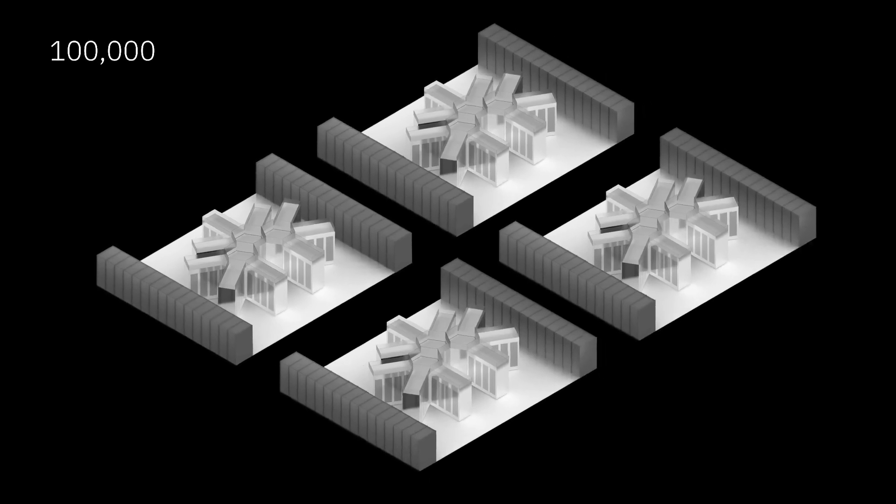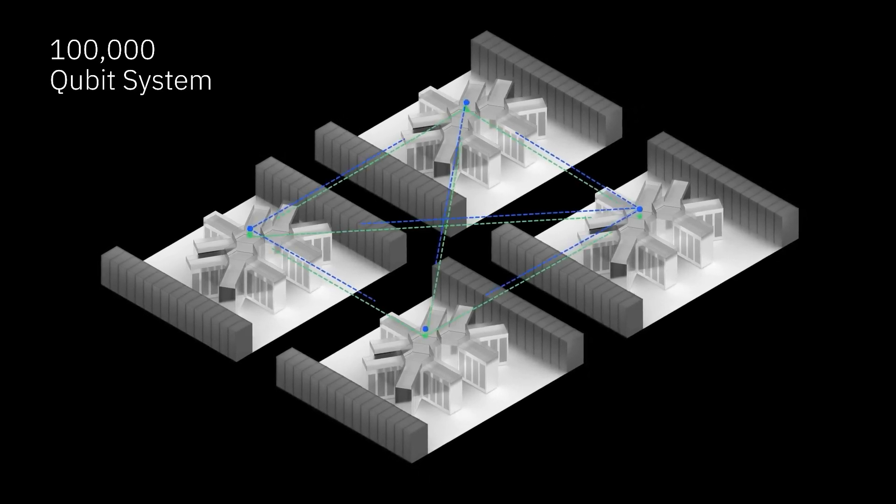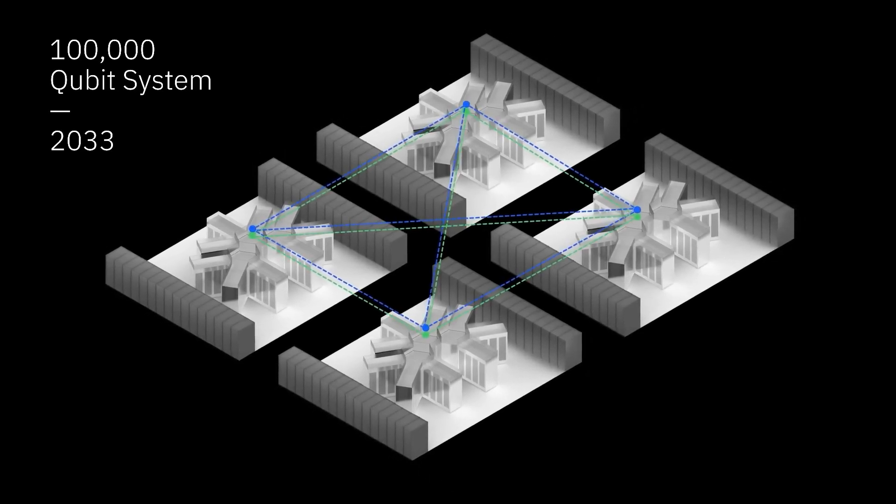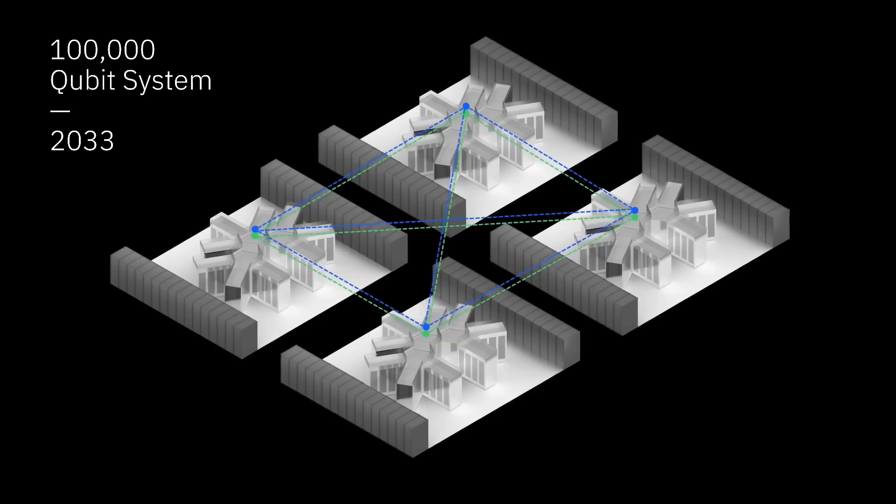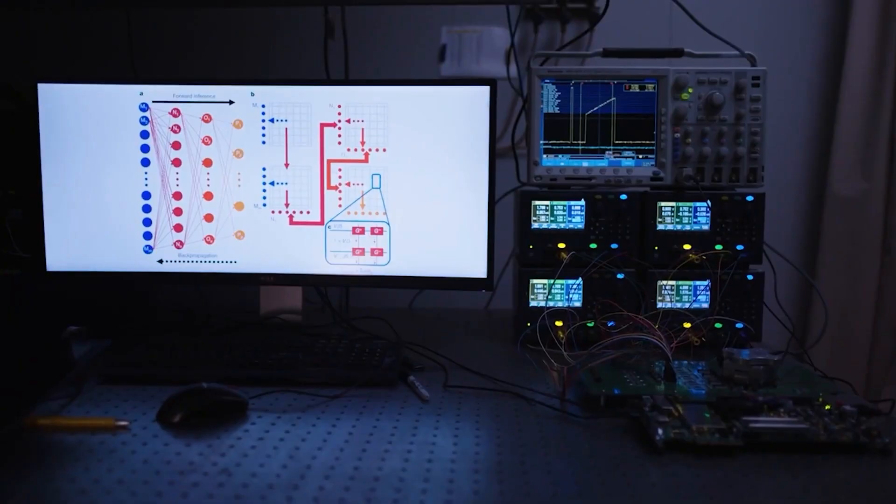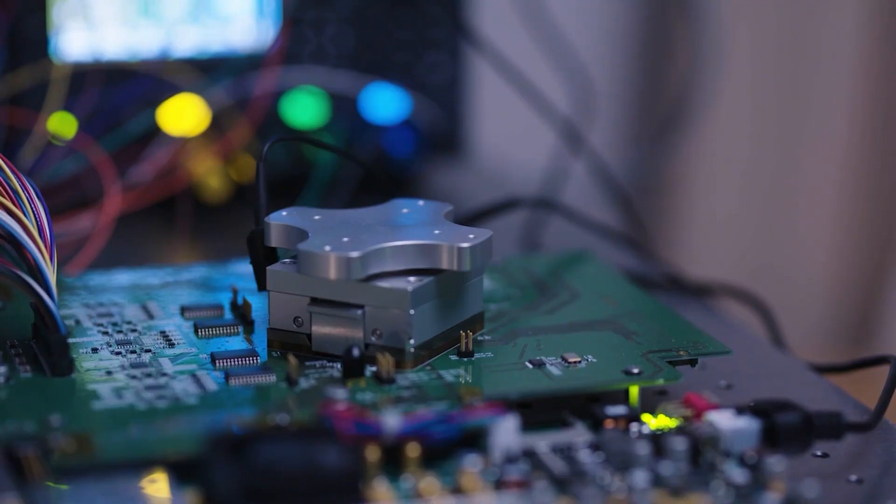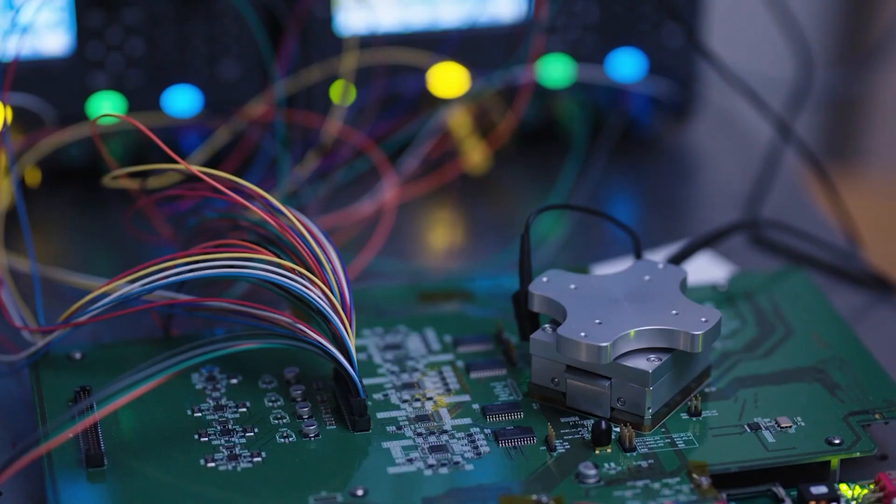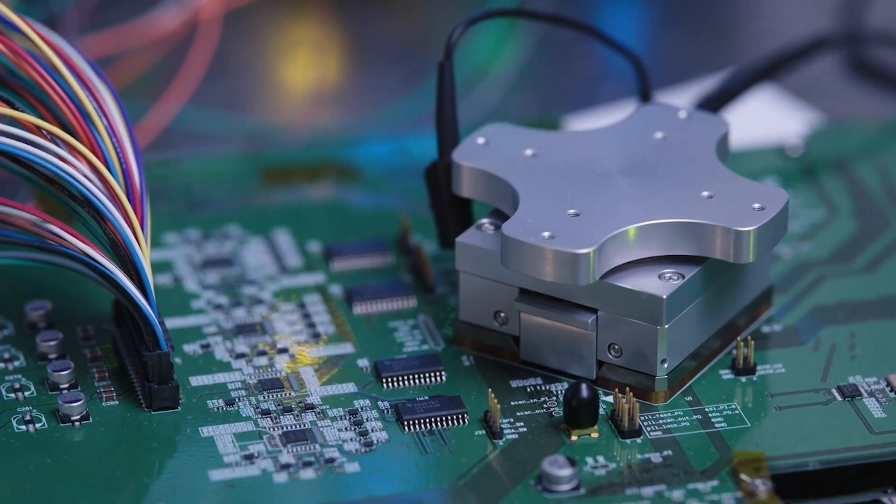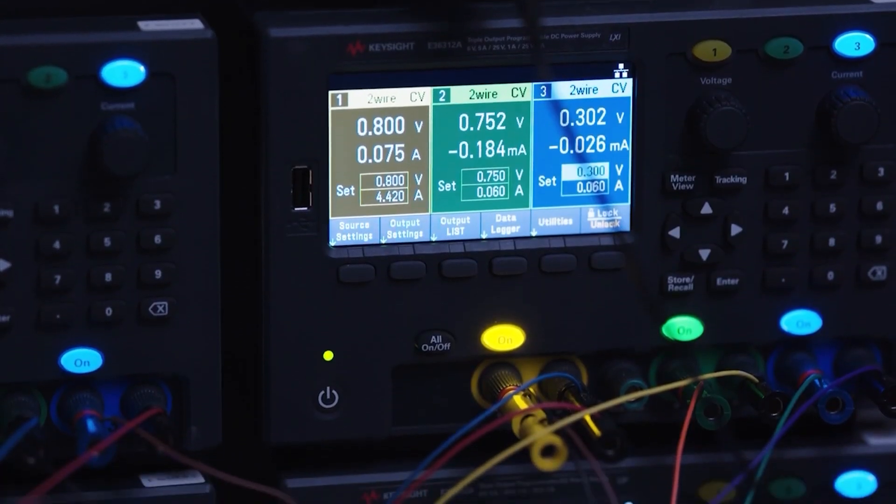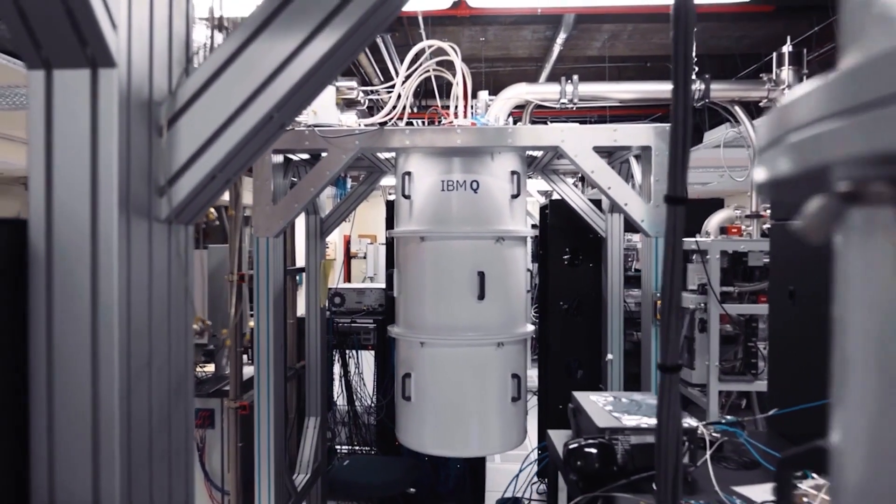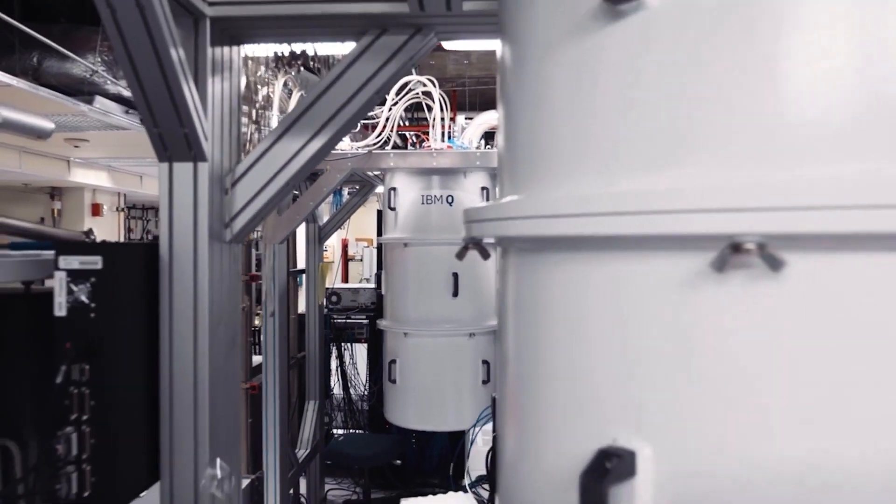The thing is, as processors scale up, and error correction schemes get more complicated, it will become more and more difficult to know things as physicists observing. Thus, having an AI system monitor and aid error correction is something that several quantum computing companies are considering. As a result, having a powerful and connected supercomputer will significantly aid the quantum computer in successfully implementing error correction at a large scale.